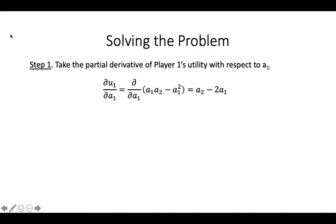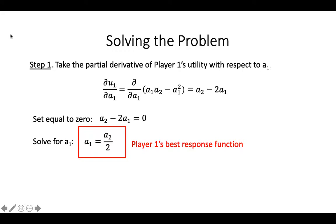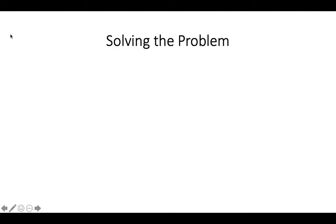Let's solve the problem. First, we take the partial derivative of Player 1's utility with respect to A1. Then, we set the derivative equal to 0 and solve for A1. We get that A1 equals A2 divided by 2. This is Player 1's best response function. It tells us that in equilibrium, Player 1's optimal choice is always the number that is half as big as whatever Player 2 picks.